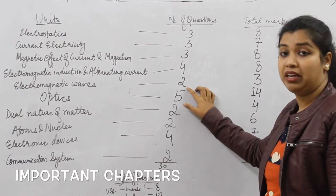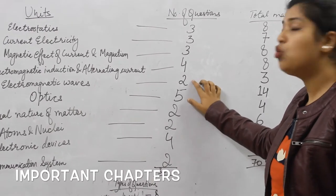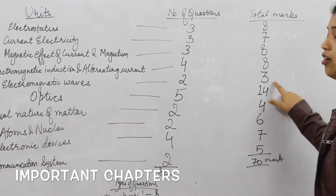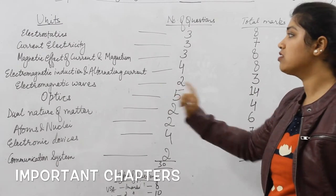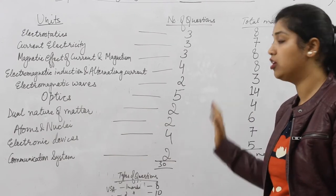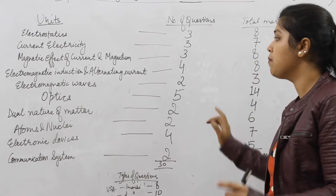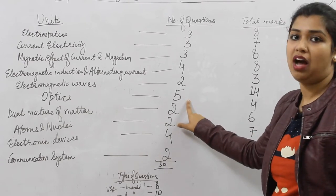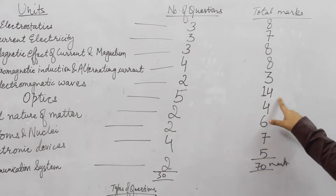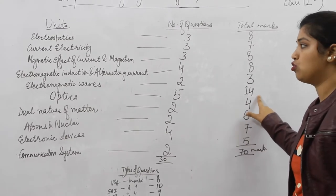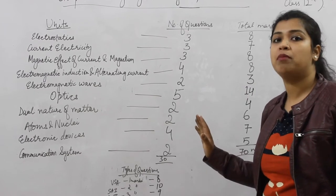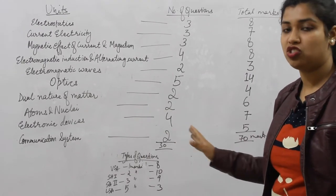Electromagnetic waves: two questions in total will be asked from this chapter and the weightage given is three marks. Optics becomes the most important chapter of the whole subject — five questions will be asked in total and the weightage given to this chapter is of maximum marks, that is 14 marks. So mind you, this chapter is very important and the maximum number of questions can be asked from it.